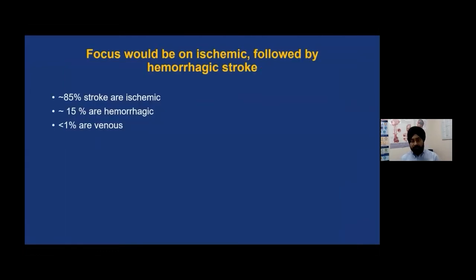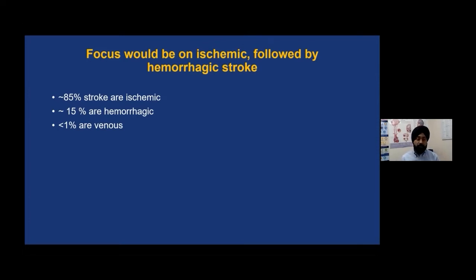Our focus will be on ischemic stroke followed by hemorrhagic stroke. About 85% of strokes in the Western Hemisphere are ischemic, which is why so much focus is on recognizing and treating these patients early. About 15% of strokes are hemorrhagic in the Western Hemisphere; in many Asian countries this can go up to 30-40%. Venous stroke constitutes less than 1% of overall stroke population, though it can be a bigger proportion in certain populations, especially those with malignancy.